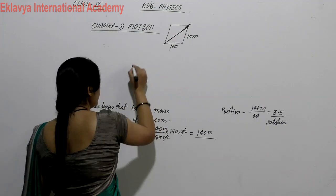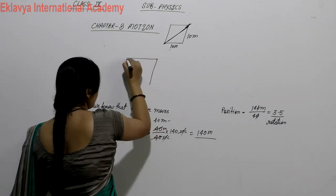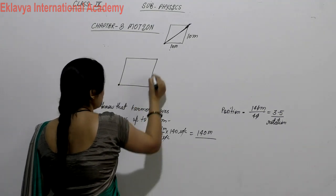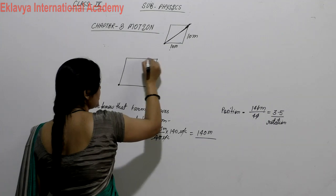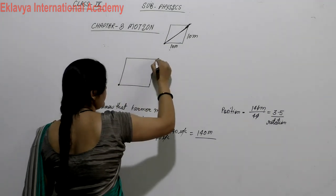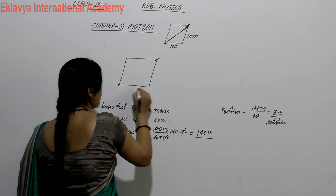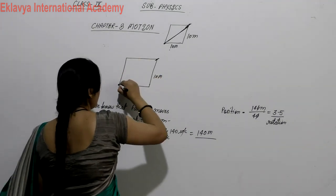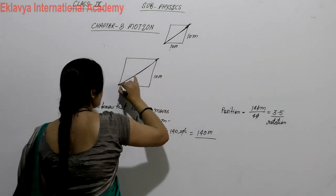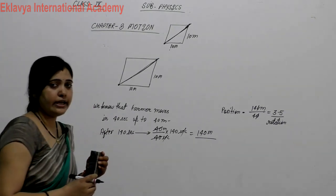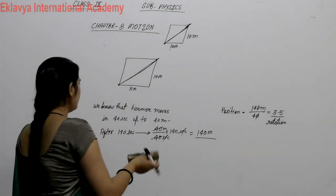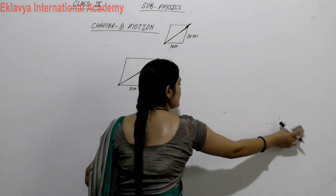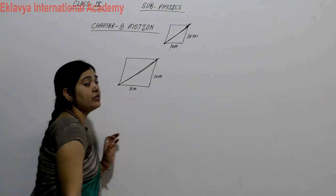Let me draw this larger to show clearly. He covers 1 rotation, 2 rotations, 3 rotations, then half rotation — total 3.5 circles. Each side is 10 meters. The shortest distance, i.e., the displacement, is the diagonal. To find this shortest distance, we use the Pythagoras theorem.